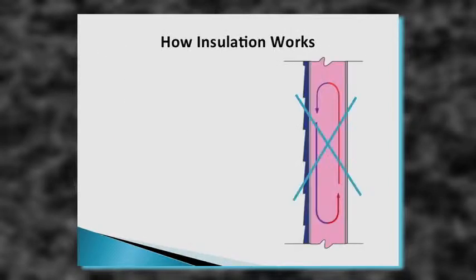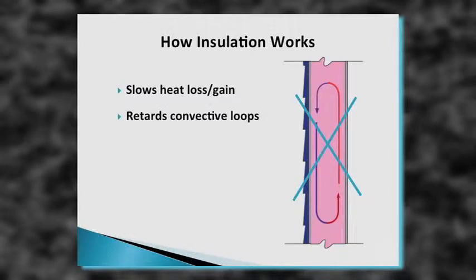Insulation works by slowing heat loss or heat gain. It also works by retarding convective loops, and it has to have an air barrier on all six sides — unless we're in the attic, in which case we need an air barrier on five sides. Think of it this way: if this room was filled with people but instead of a wall behind us there were rose bushes, the more rose bushes there were, the slower people would leave the room. Insulation works the same way — the thicker the insulation, the harder it is for heat to get through it.